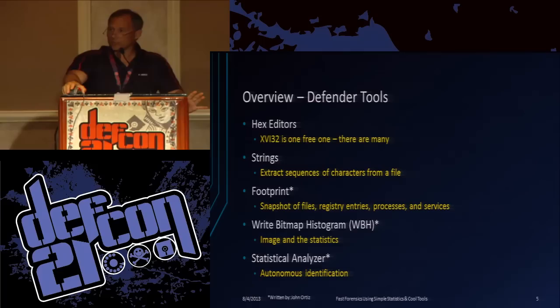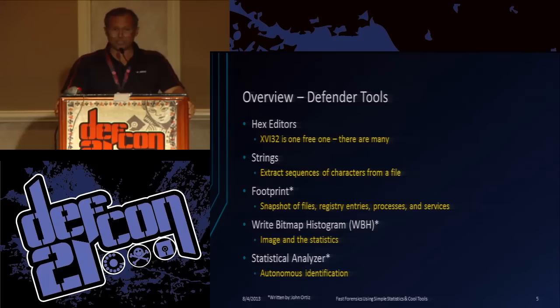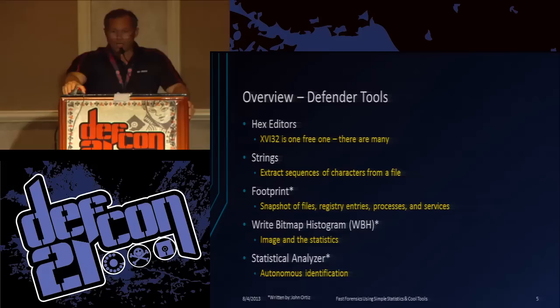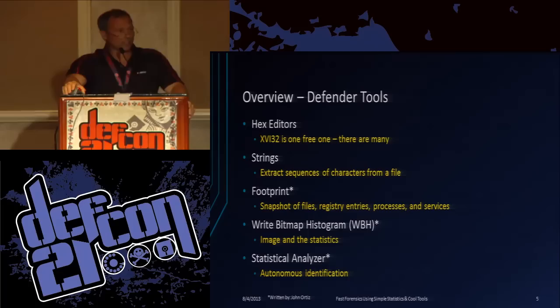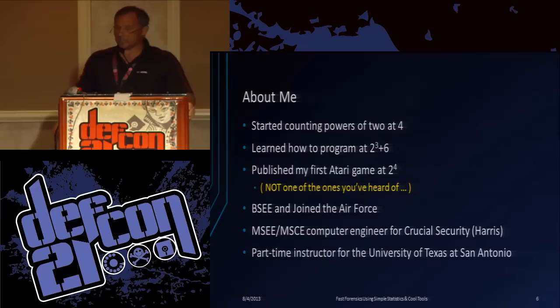Defenders have hex editors and strings - you all know what that is. Footprint - that's one of my tools I wrote that helps identify what malware did to your system. It takes a snapshot of files, registry keys, processes and services. Then you can take a later snapshot and compare them. Right bitmap histogram, which is a terrible title, but I can't think of anything else to call it. It takes an image of a file and also takes some basic statistics. You can learn a lot from just a few basic statistics. The statistical analyzer kind of combines the two and automates them. My contact information is at the end of the presentation.